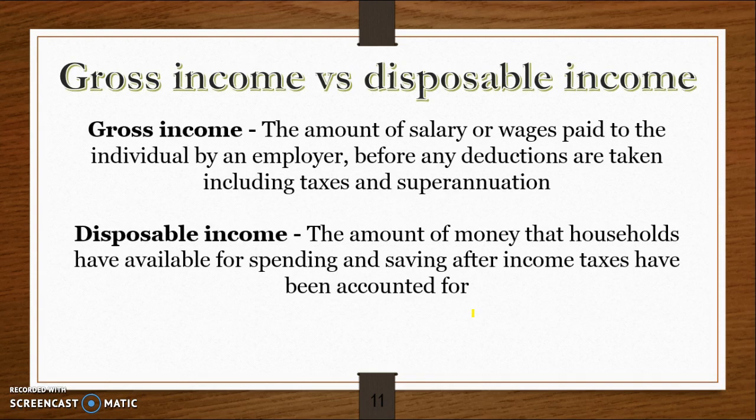The last two terms: gross versus disposable income. Gross income is the amount or salary you receive before you get taxed — before any deductions like taxes and superannuation. Disposable income is the amount of money that households have after income taxes have been accounted for.